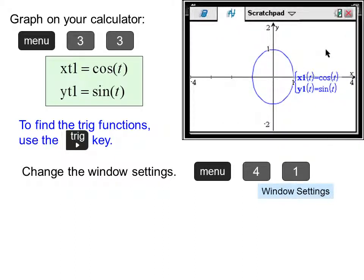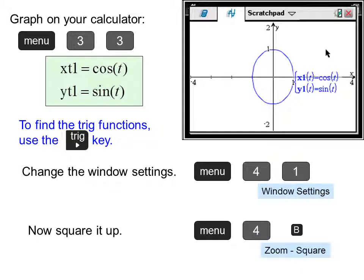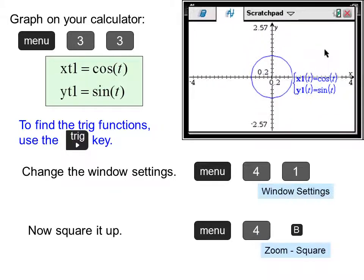And we can change x min, x max, x scale, y min, y max, and y scale, and then press OK. Now our circle is distorted because the screen is not exactly twice as wide as it is high, so it looks like an ellipse although we know it should be a circle. So to square it up, press menu, four, B, zoom square.